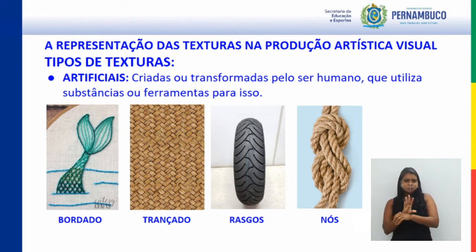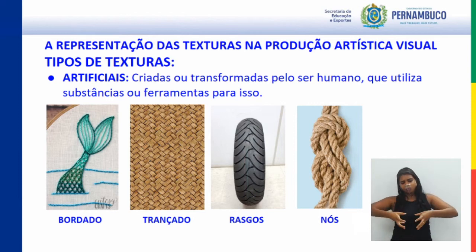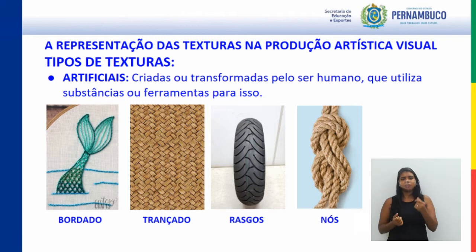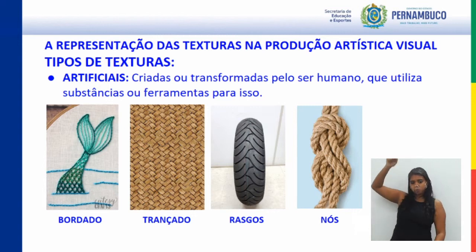Na terceira imagem, temos o exemplo de rasgos. Trouxe a imagem de um pneu: a borracha é rasgada quando os pneus são fabricados, produzindo esses rasgos através de máquinas para que ao circular nas avenidas o pneu tenha aderência com o solo. Como são produzidos por maquinário, também é uma textura artificial. E os nós — na foto, vocês têm um exemplo de nó em corda. Qualquer tipo de nó, a partir do momento que se faz uma sequência de nós e esses nós revestem alguma superfície, também se tratam de texturas artificiais, porque os nós são produzidos pelas mãos humanas.